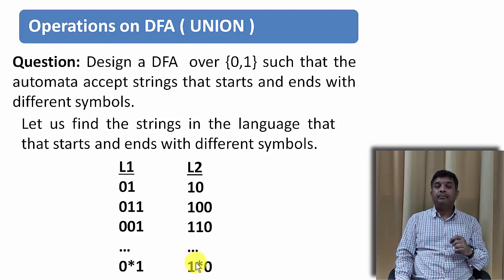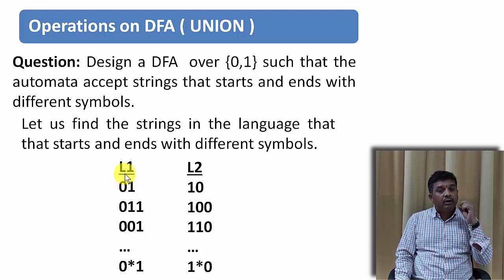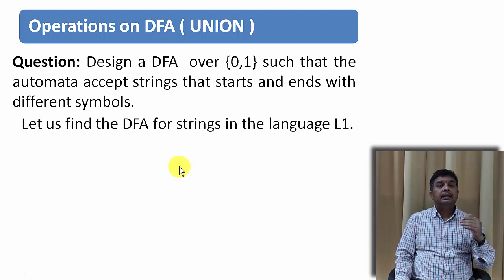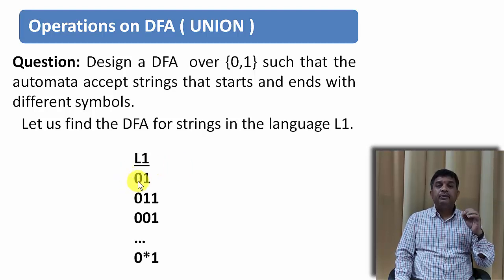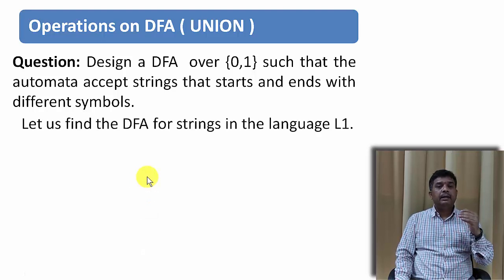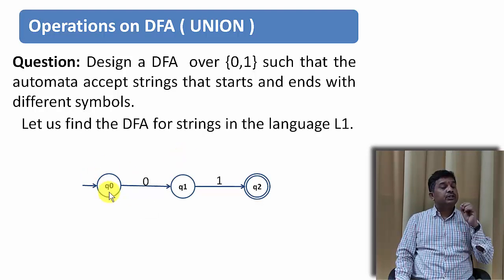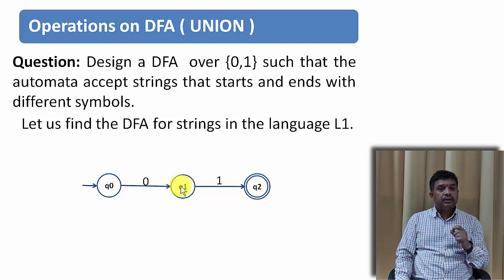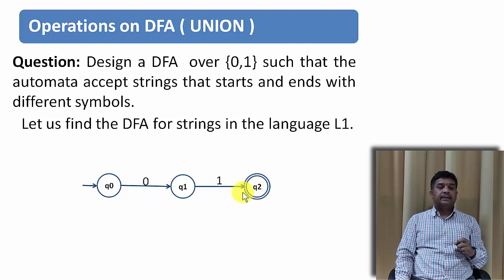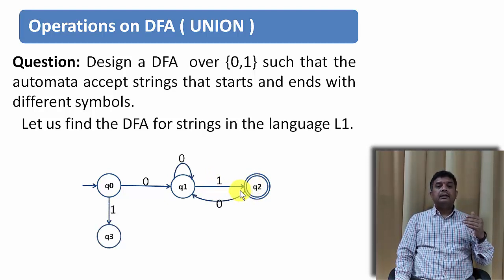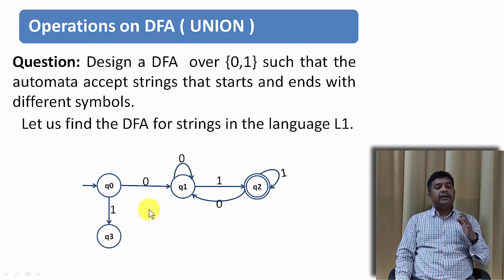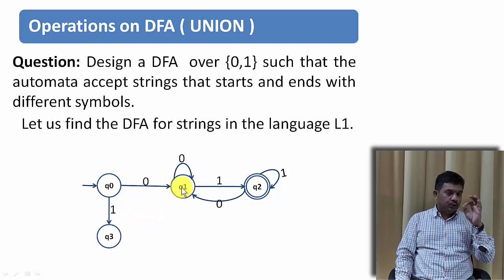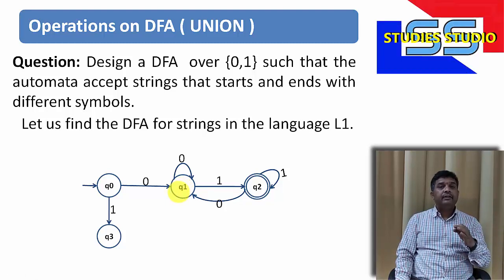We will find the DFA for language L1 and then for language L2 and perform the union operation. For L1, the string starts with 0 and ends with 1. The minimum string length for this language is 2. Starting at Q0, when the first symbol 0 appears we go to state Q1. Then when symbol 1 appears we reach the final state. You define the other transitions at different states accordingly. This is the required DFA for L1.